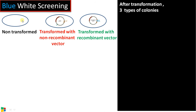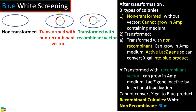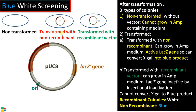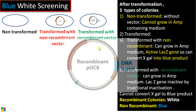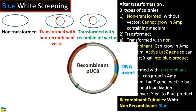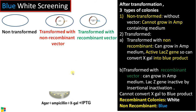After the transformation experiment, we get three types of colonies: the first is non-transformed, the second is transformed with a non-recombinant vector, and the third is transformed with a recombinant vector. In the transformed non-recombinant, the vector is unchanged — there is no change in the vector — whereas in the case of the recombinant vector, our gene of interest is present in the lacZ region, making that region no longer active — the process called insertional inactivation.